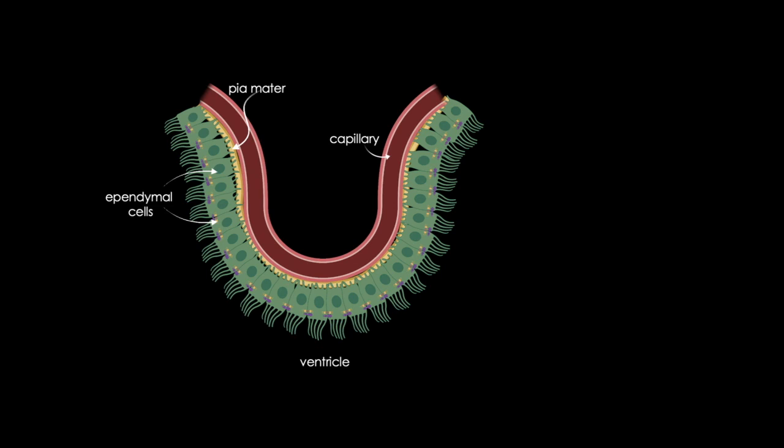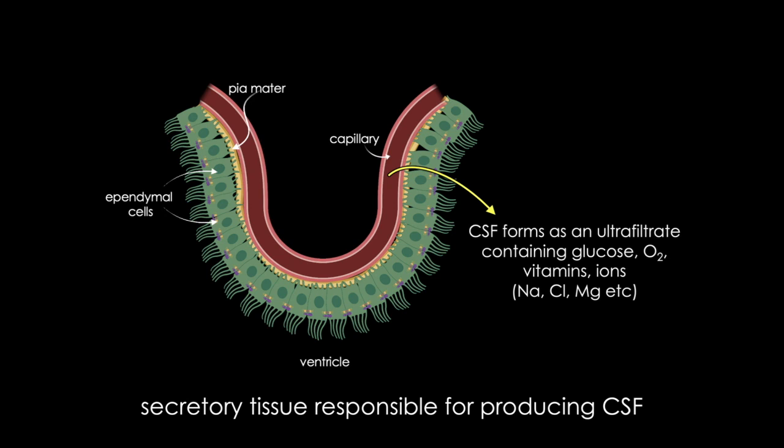As I mentioned, the choroid plexus serves to cushion and protect, but it also turns out that it has critical metabolic functions. First, the cells of the choroid plexus produce and secrete CSF, which forms as a filtrate from the capillaries of the choroid plexus, and the ependymal cells then transform it into CSF. So it's got a lot of goodies, ions, glucose, oxygen, and vitamins, all the things that the brain needs for its metabolism.